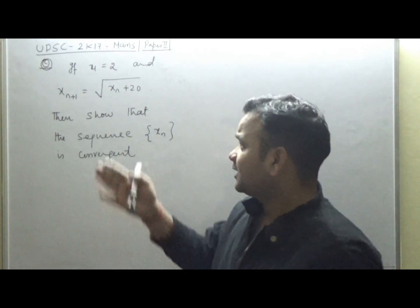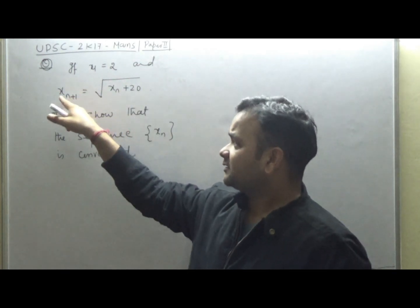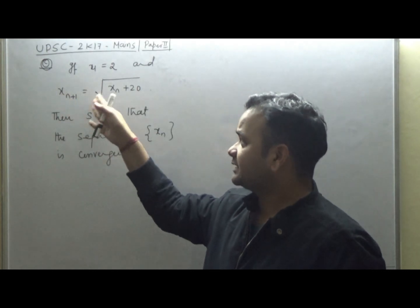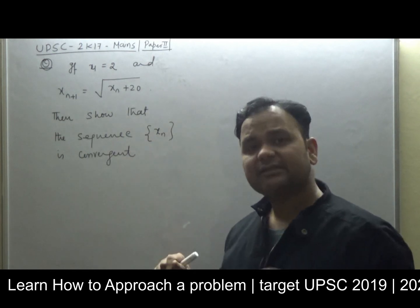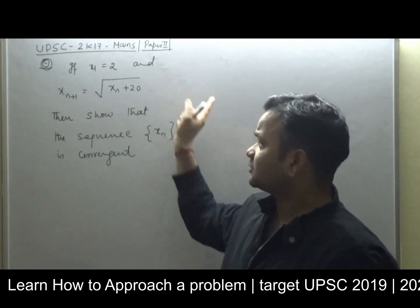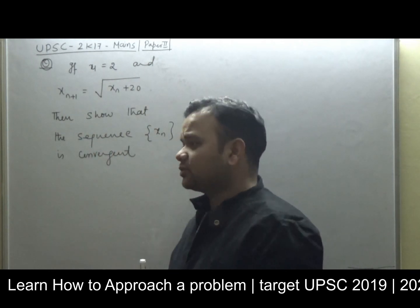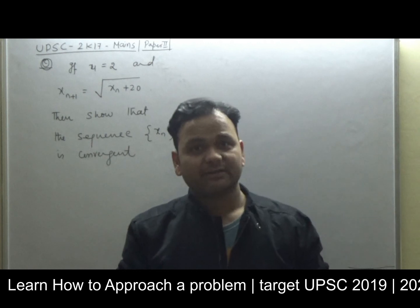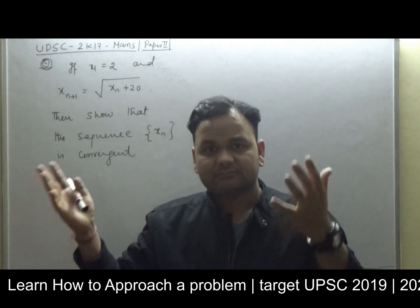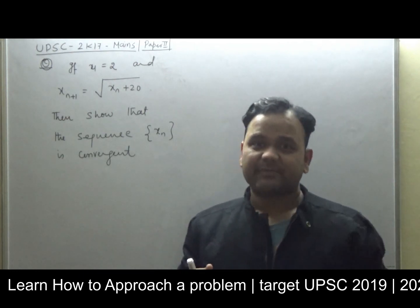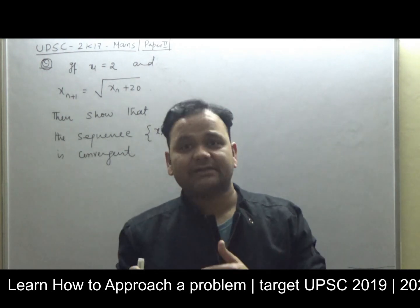So let's understand the concept. The question is: if x₁ is equal to 2, the initial value is 2, and we define the recurrence x_{n+1} = √(x_n + 20), then show that the sequence x_n is convergent. Sometimes this is a subjective question — in an interview or a PhD exam — and you will need to prove that the sequence is convergent. So you should know how to write these kinds of solutions.